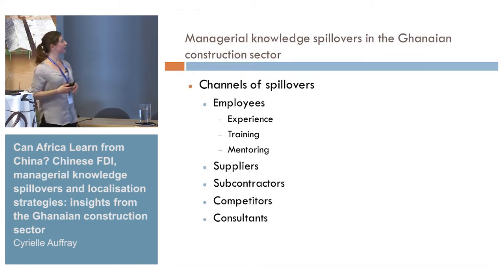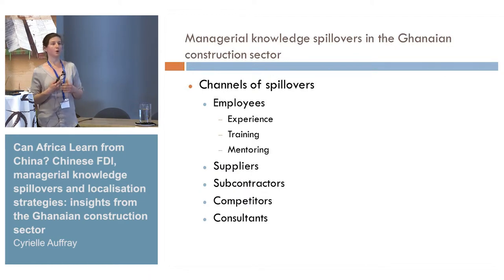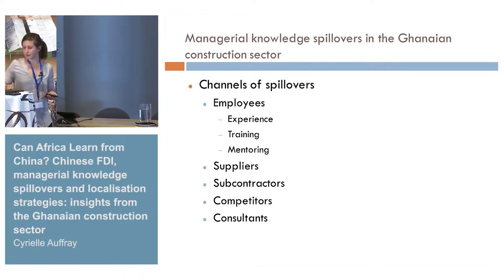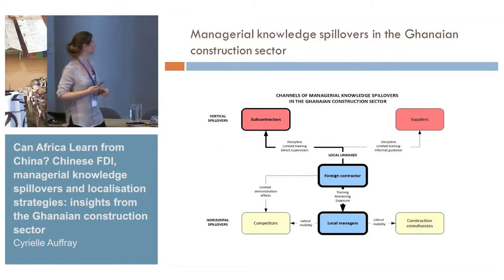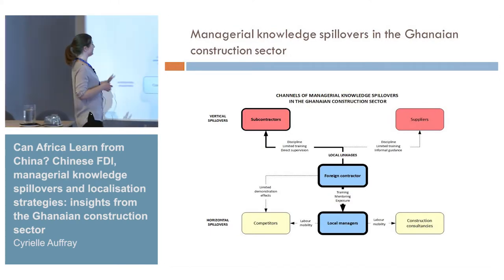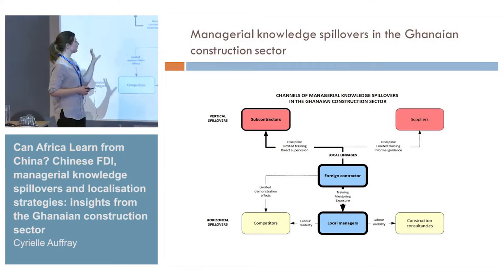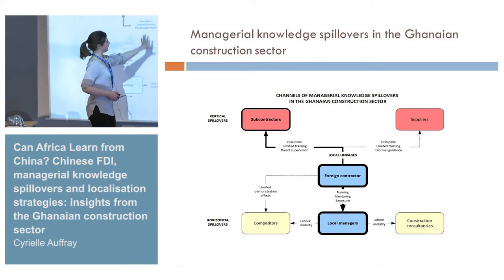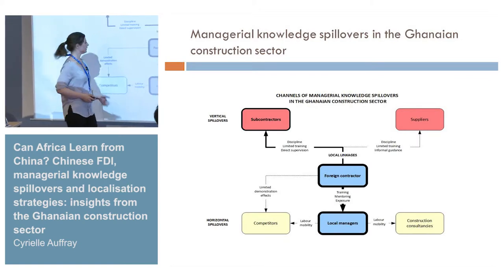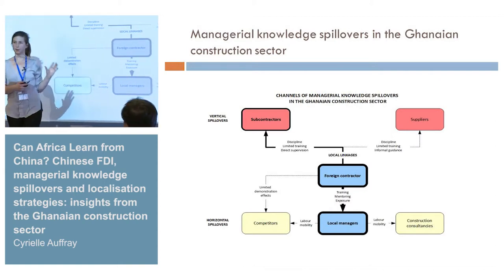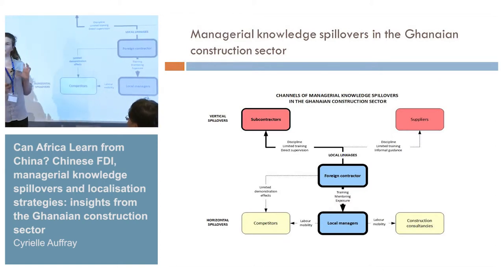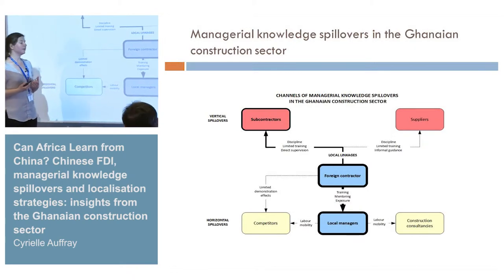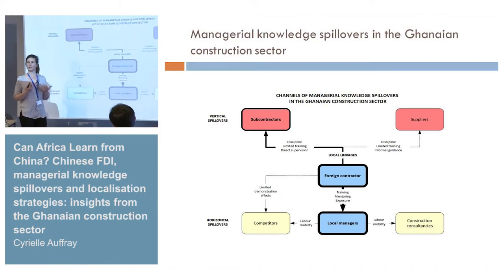I first looked at how management knowledge spillovers occur in the Ghanaian construction sector. There are different channels of spillovers. The foreign contractor is one node, and the main recipients of spillovers are the employees in the foreign construction companies — mostly managers — because they have the absorptive capacities, the education, and the training necessary to understand foreign managerial practices.